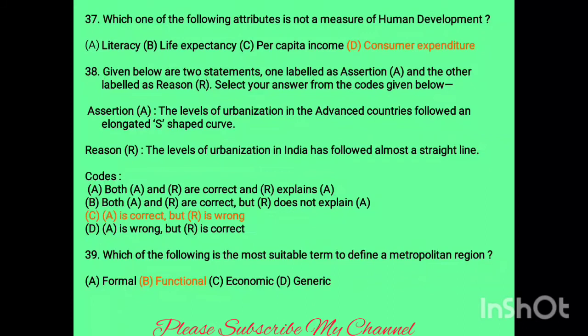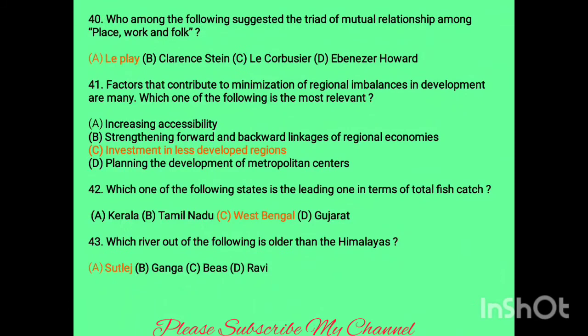Question thirty-seven: which attribute is not used to measure the Human Development Index? The answer is consumer expenditure. Question thirty-eight is an assertion-reason on urbanization — the trail level of urbanization in advanced countries follows an elongated S-curve, while India's urbanization follows almost a straight line. Question thirty-nine: the most suitable term to define the metropolitan area is functional region — due to functional activity, a metropolitan region can be formed.